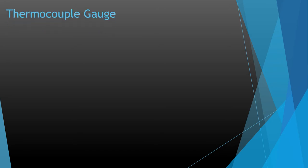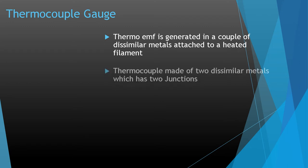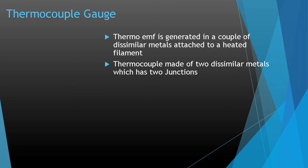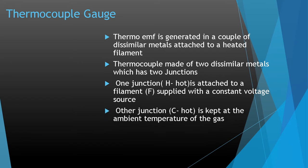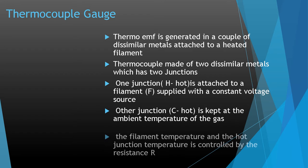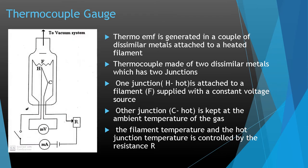The next type is the thermocouple gauge. A thermoEMF is generated in a couple of dissimilar metals attached to a heated filament. The thermocouple of dissimilar metals has two junctions. One junction, H (hot), is attached to a filament supplied with a constant voltage source. The other junction, C, is kept at the ambient temperature of the gas. The filament temperature and the hot junction temperature are controlled by a resistance R. In the schematic diagram, H represents the hot junction, F represents the filament, C represents the cold junction, and R represents the resistance.